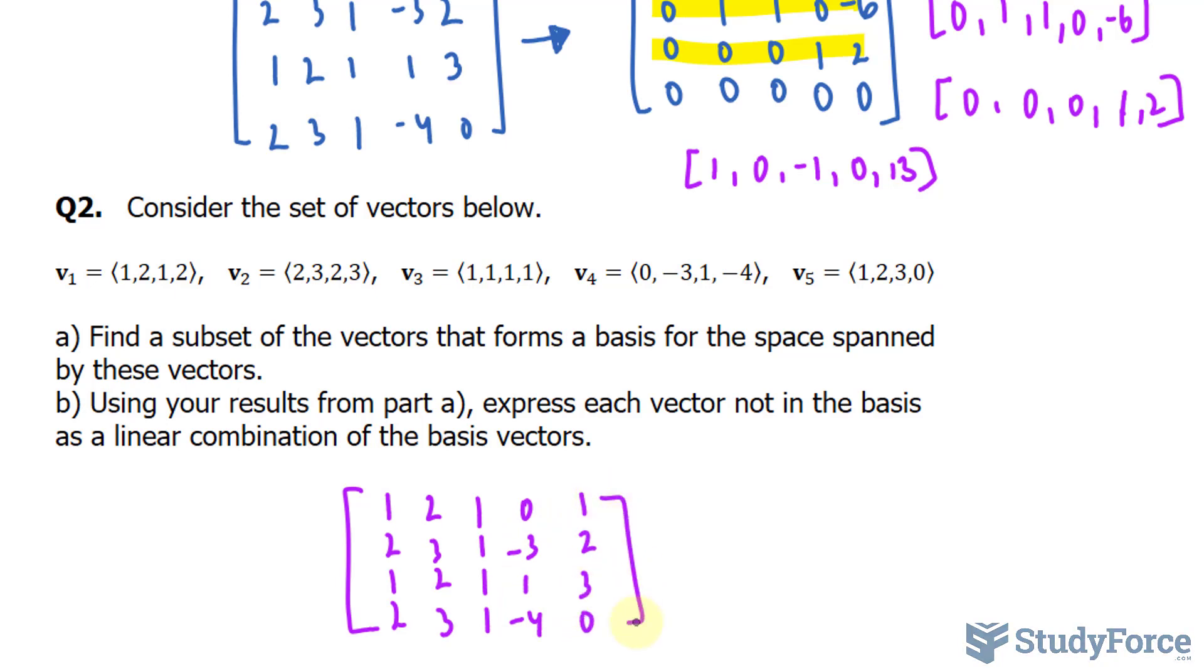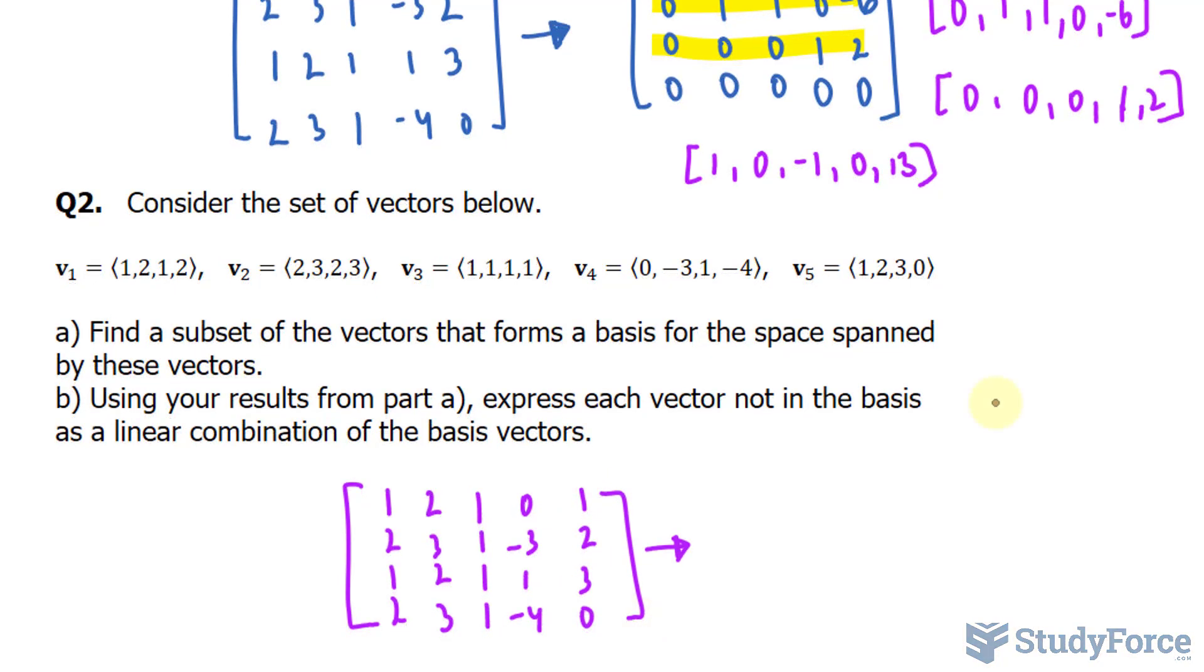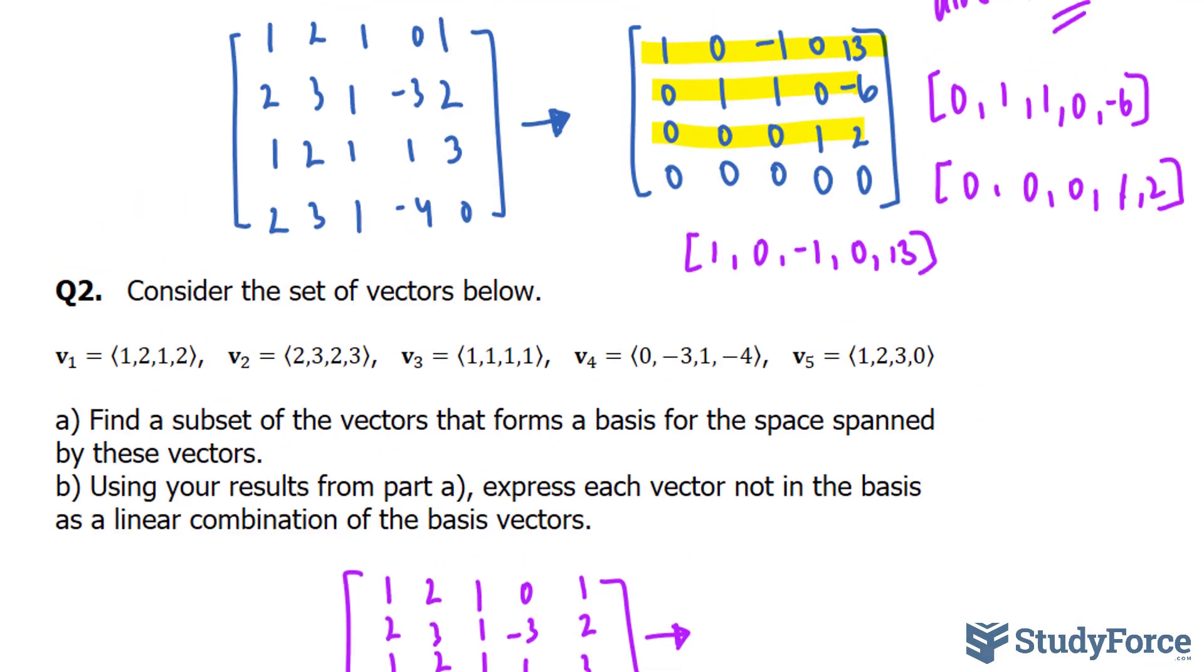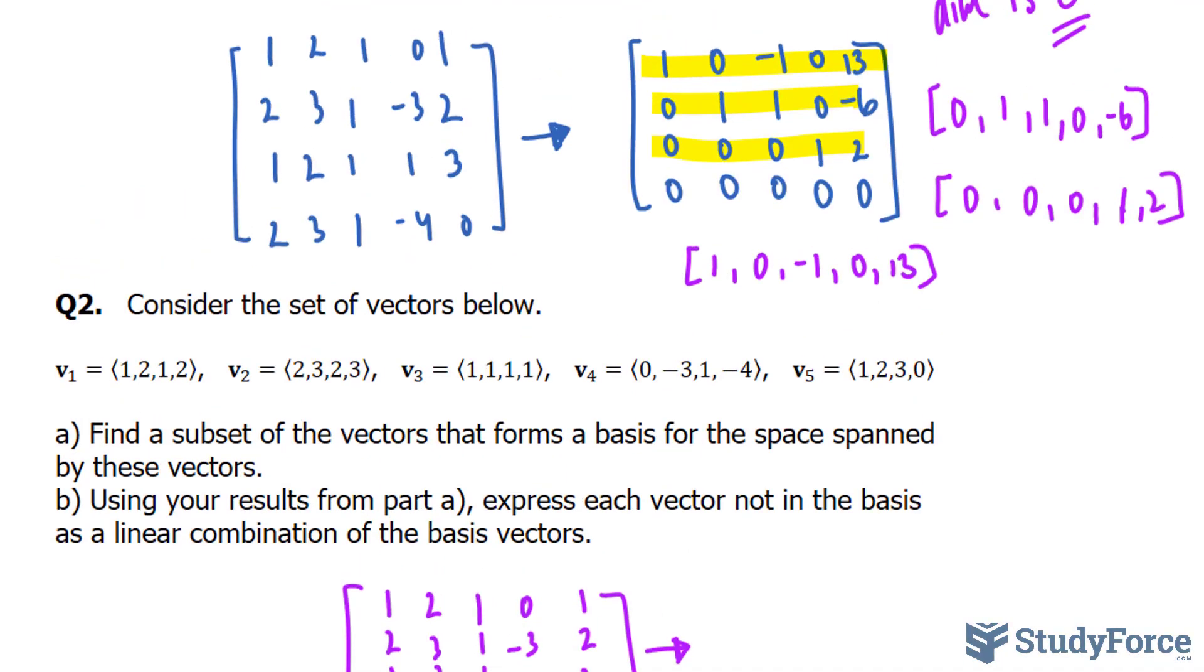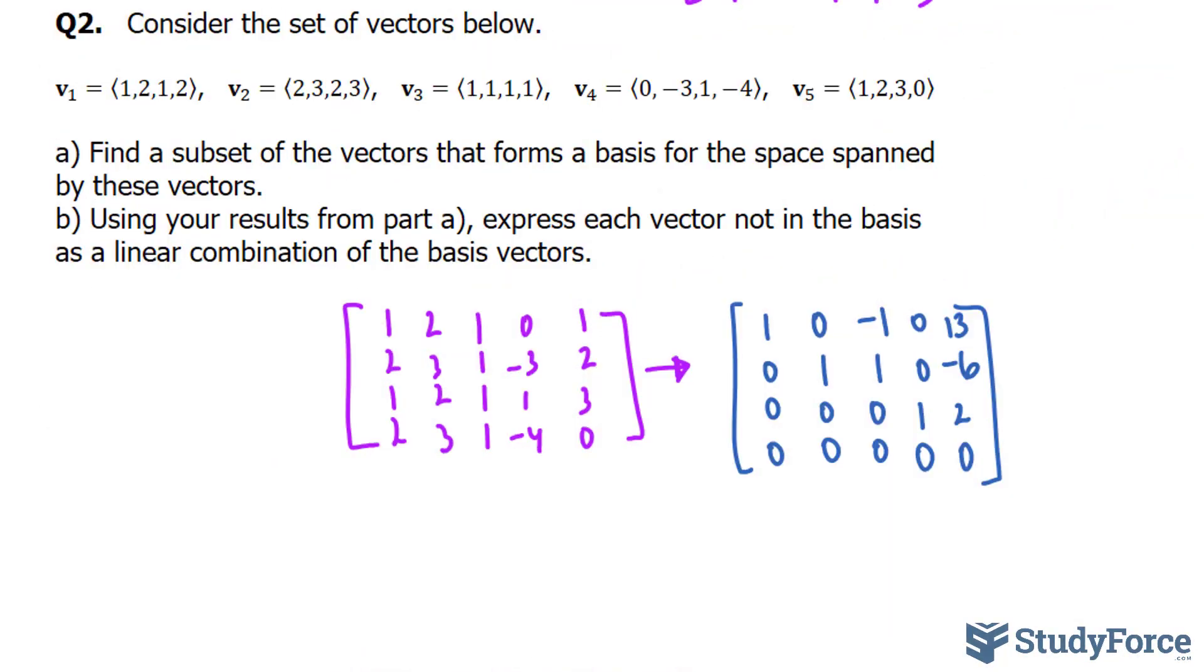We next put this in row echelon form. And if you can't tell already, this is identical to what we had above here. So all we have to do is copy this matrix as our row echelon form. There you go. I've even erased the highlights.